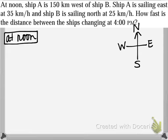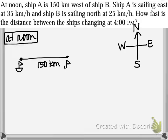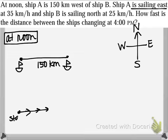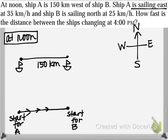Ship A is 150 kilometers west of ship B. So ship A is starting here, 150 kilometers west of ship B, and ship B is starting there. Once these ships start moving, I'll draw a second diagram to indicate the motion. Ship A is sailing east, and ship B is sailing north, so I'll draw arrows to indicate direction.